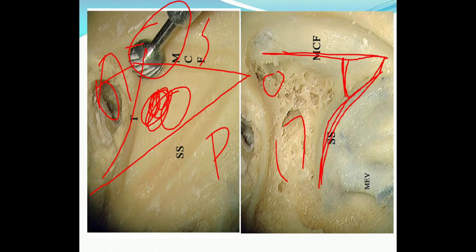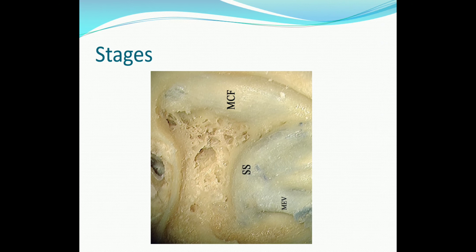Sigmoid sinus thrombophlebitis is inflammation of the inner wall of the sigmoid sinus with formation of an intra-sinus thrombus, usually occurring as a complication of acute mastoiditis. The route of spread is either by direct bone erosion or venous thrombophlebitis. Four stages are described: the first stage is formation of a perisinus abscess — the abscess from mastoid air cells extends, destroying the sinus plate, and collects just outside the outer wall of the sigmoid sinus.